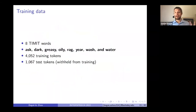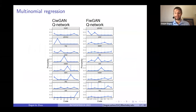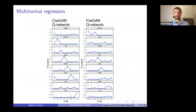We first try a small model with eight words: dark, greasy, oily, rag, gear, wash, and water — about 4,000 training tokens and about 1,000 test tokens. We send unobserved test data through the Q network and see how classification happens. One result is that lexical learning occurs both in the CIWGAN architecture with one-hot encoding and in the FIWGAN architecture with binary code encoding. Each lexical item gets a unique code classification in the Q network.